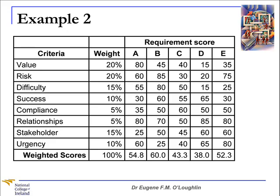According to the value criteria, requirement A has a score of 80 out of 100, whereas requirement D has a score of just 15 out of 100. I do this for each of my criteria. When I've come up with a score for each requirement based on each criteria, I multiply the weighting by each score to give the totals along the bottom, according to the formula used previously. Requirement B with a weighted score of 60 has the highest priority. Requirement A comes in second at 54.8, requirement E at 52, requirement C at 43, and requirement D with a weighted score of 38 has the lowest priority.